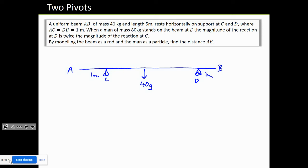Because it's a uniform rod, the distance from C to the center of mass is 1.5 meters, and 1.5 meters on the other side as well. We have a reaction force at C and a reaction force at D. The reaction at D is twice the reaction at C, so if this is R, then the reaction at D is 2R.